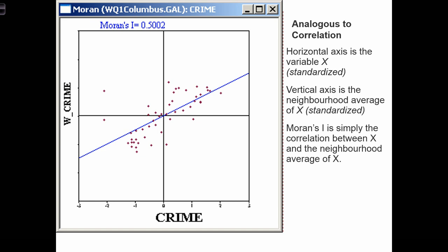Recall that a scatterplot can be used to assess the direction and strength of correlation between two variables, x and y. We can do the same thing with spatial autocorrelation by using a Moran's scatterplot.